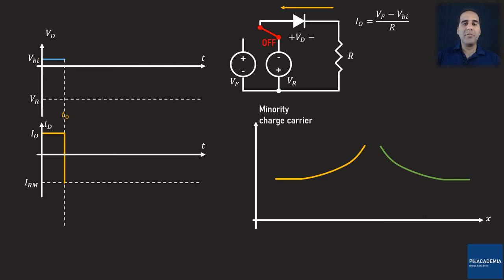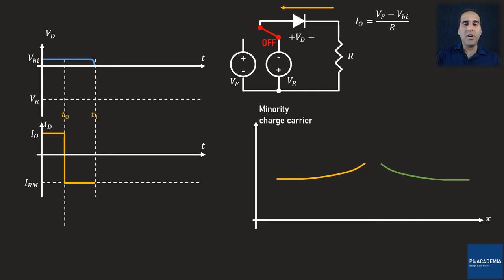Hereafter, the discharge of the minority charge carriers at the edges of the depletion region continues, and therefore the concentration of the minority charge carriers gets smaller and smaller at the edges of the depletion region. During this time, the reverse current level remains at IRM. By looking at the minority charge carrier concentration diagram, you'll find that at T1 the minority charge carrier has reached the equilibrium state. The time between T0 and T1 is called the storage time TS.